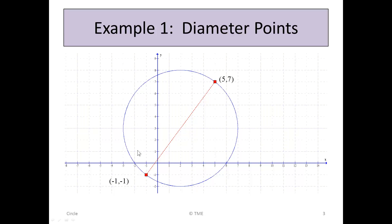So you're given information that (-1, -1) and (5, 7) represent the diameter of a circle. We can see that if they do, they're both on the circle, on the perimeter, and they're furthest apart. Now if we were to find the halfway point, we might find the centre, because we would have two radii there — a radius from the centre out, and another one here.